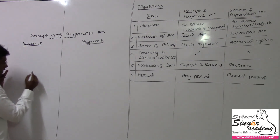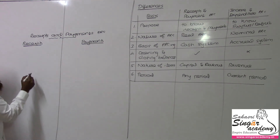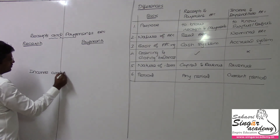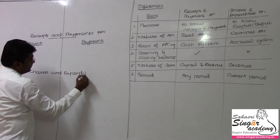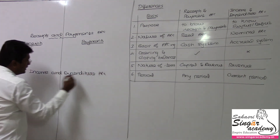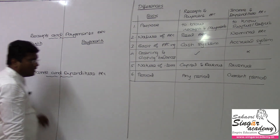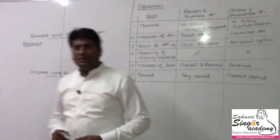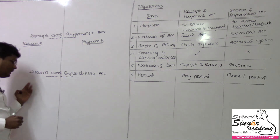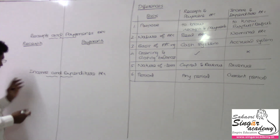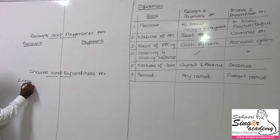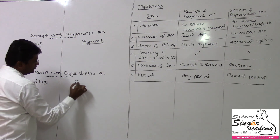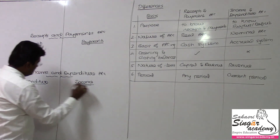Then we have income and expenditure account to be prepared. Income and expenditure account is nothing but a nominal account — like a profit and loss account. In the profit and loss account, the debit side is called expenditure side, and the other side is income. So the two sides are expenditure and income.